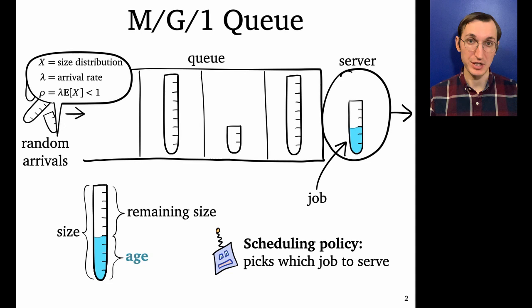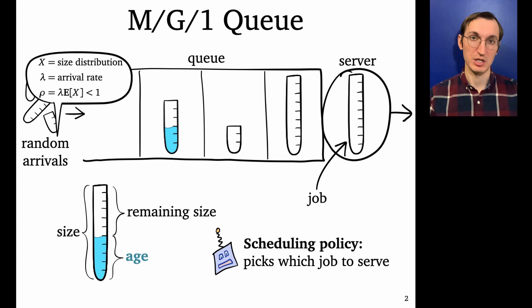Okay, and today we're talking about scheduling. So the scheduling policy is what decides which job gets to be in service. And it does so preemptively. So we can decide at any moment to switch which job's in service, and there's no delay or loss of work for doing this.